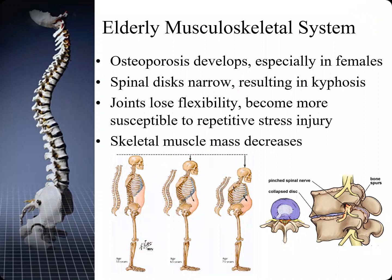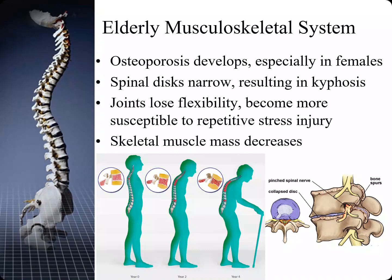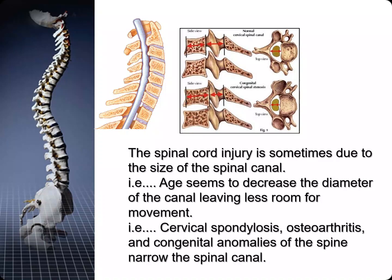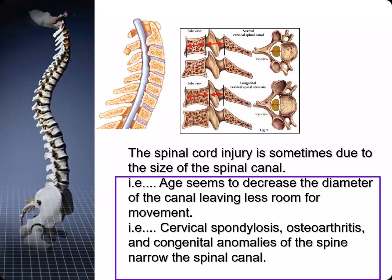In viewing the elderly musculoskeletal system, osteoporosis develops especially in females. The spinal disc narrows resulting in kyphosis. Joints lose flexibility and become more susceptible to repetitive stress injury, while the skeletal muscle mass also decreases. As we age, spinal cord injury is sometimes due to the size of the spinal canal, which decreases in diameter leaving less room for movement of the spinal cord.